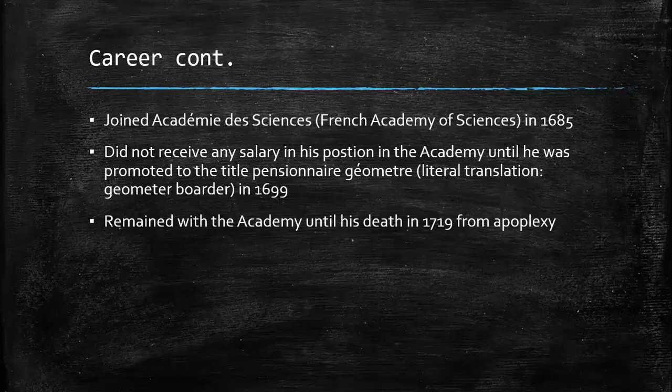He did not receive any salary until 1699, when he was promoted to the title Pensionnaire Géomètre, which was a distinguished post as only 20 of the 70 members at the time were paid. He remained in the academy until he died from apoplexy, unconsciousness or incapacity resulting from a cerebral hemorrhage or stroke, in 1719.